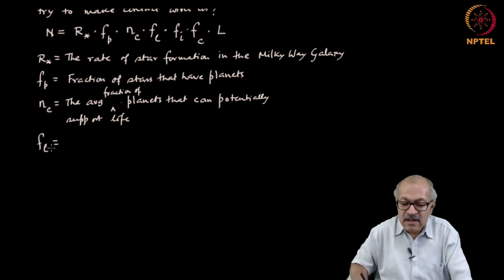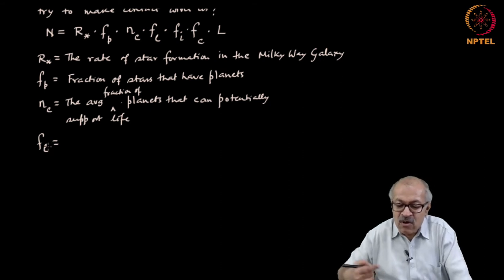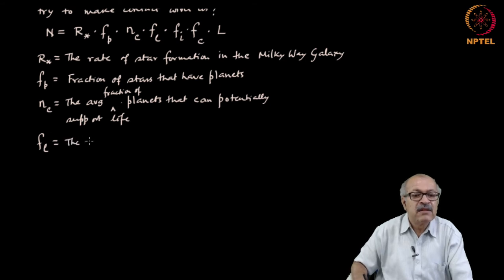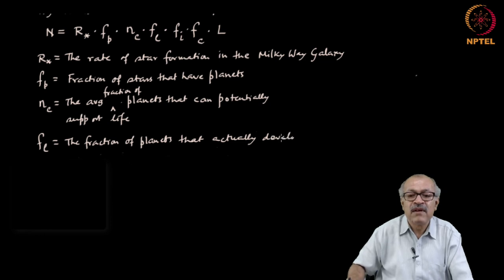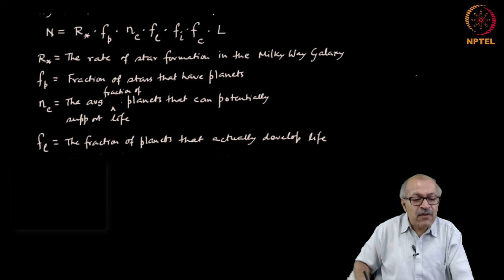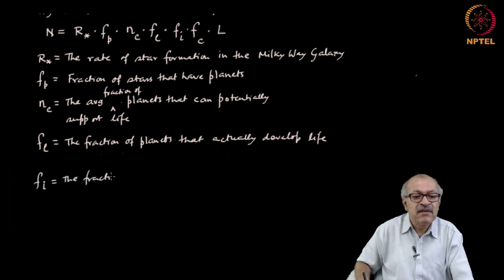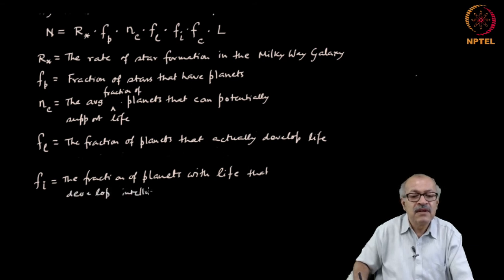Then we have fl. Fl is the fraction of planets that actually develop life. Fi is the fraction of planets with life that develop intelligent life.